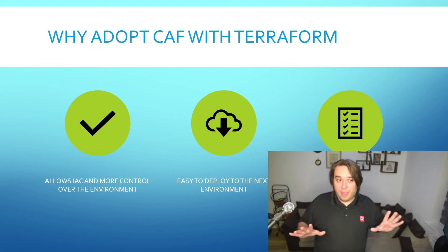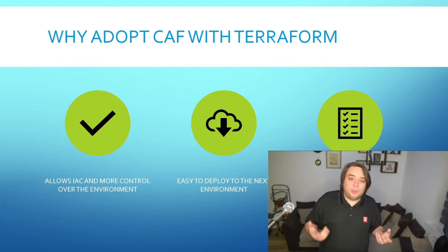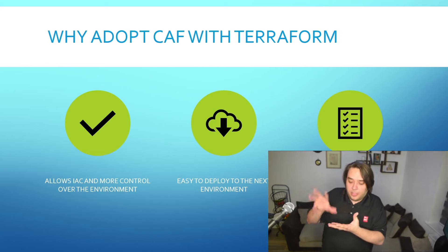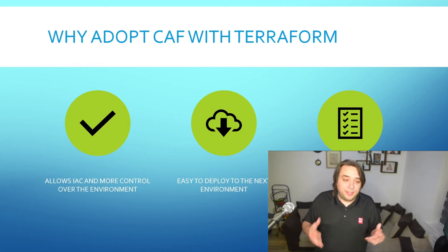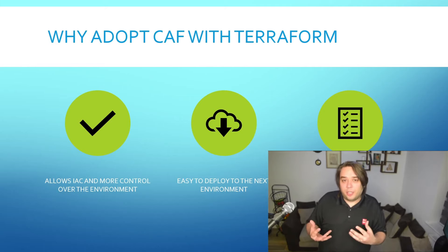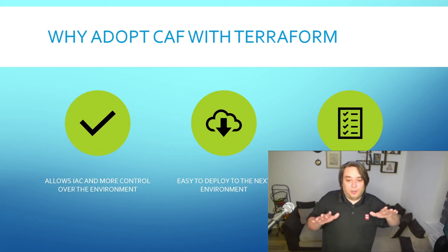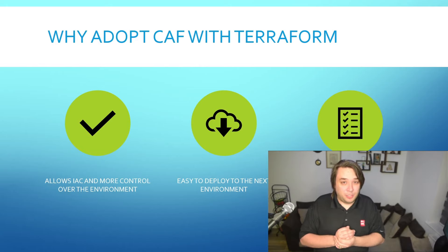So why adopt CAF with Terraform? It allows more control of the environment. State files are basically a snapshot in Terraform - once Terraform configures everything it saves a state file, and in that state file you have more control of what's changed and what's going on with your environment. You have remote state files, so you're not limited to a single developer working on their desktop computer. We're going to do the whole remote state file approach, which is definitely the better approach.